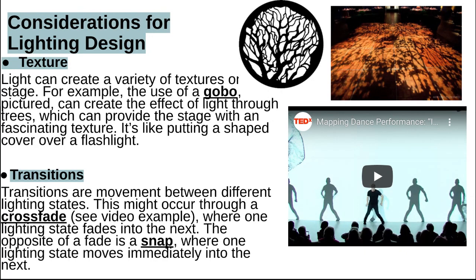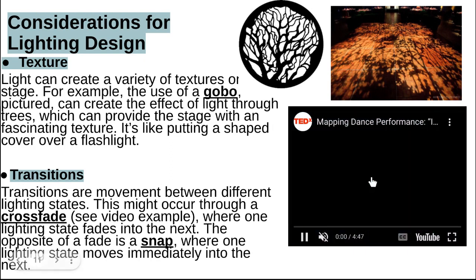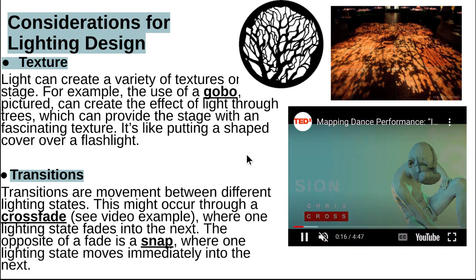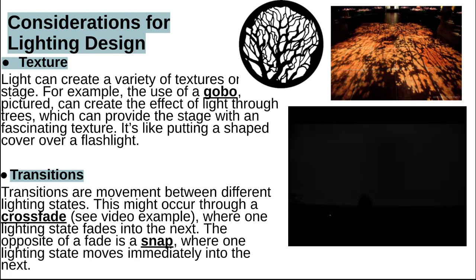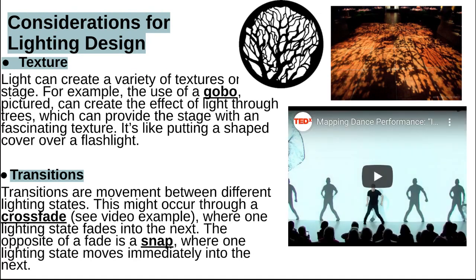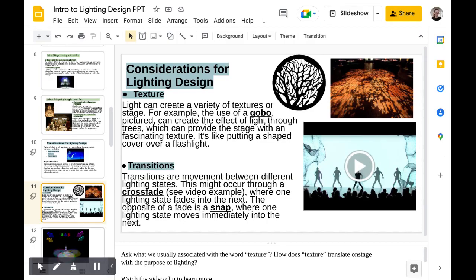Transitions are movement between different lighting stages. This might occur through a crossfade, where one lighting state fades into the next. As you can see, we start as a blackout and then crossfade the light up to full. The opposite of a fade would be a snap, where one lighting state moves immediately to the next. Thank you for watching Intro to Lighting Design by TheDramaGoat. To be continued.